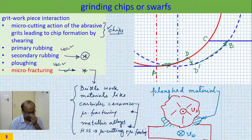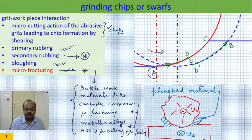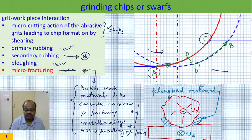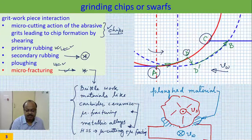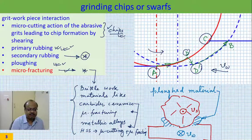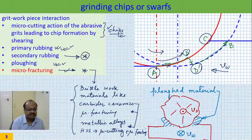Because of the rotation of the grinding wheel, the grit is supposed to move from A to C. Because you also give a feed VW (the work speed), it is supposed to move from A to B. But because of primary rubbing it cannot penetrate instantly, so it moves from A to D. Then from D to D' it penetrates, and from D' to B it generates chips by micro cutting action. From A to D there is primary rubbing.